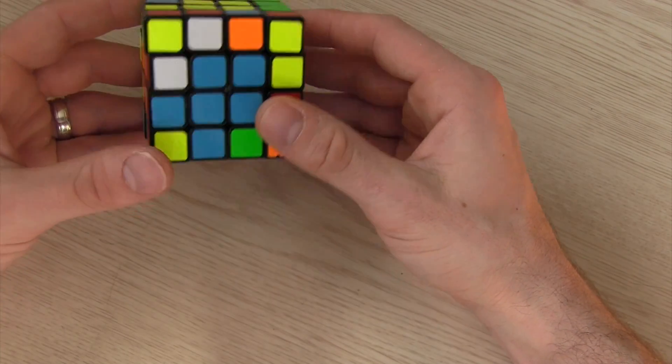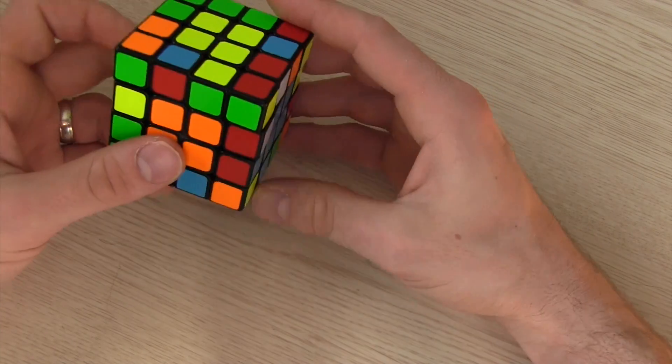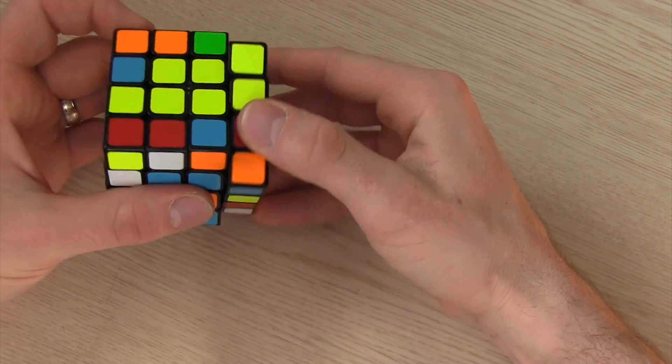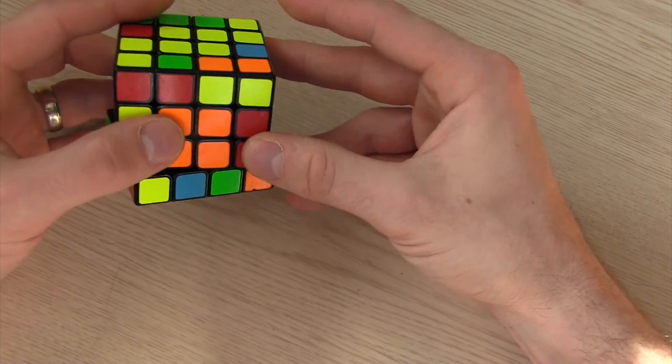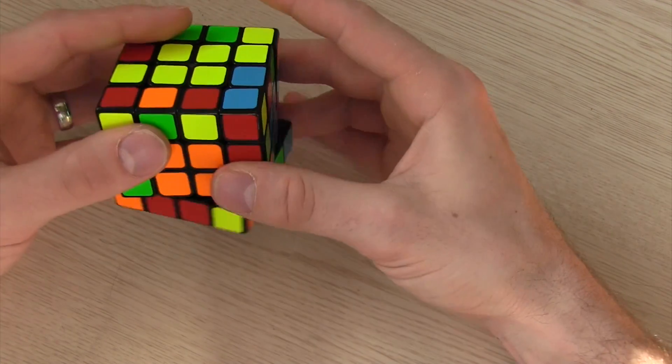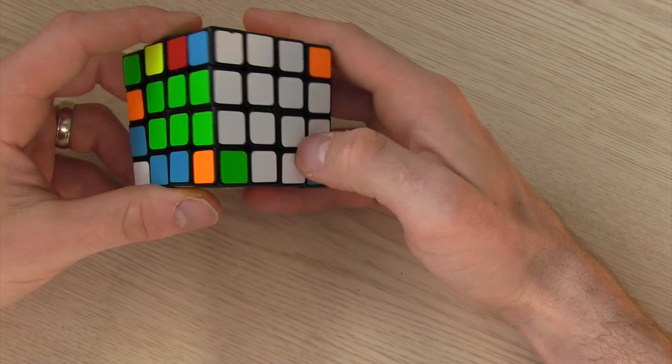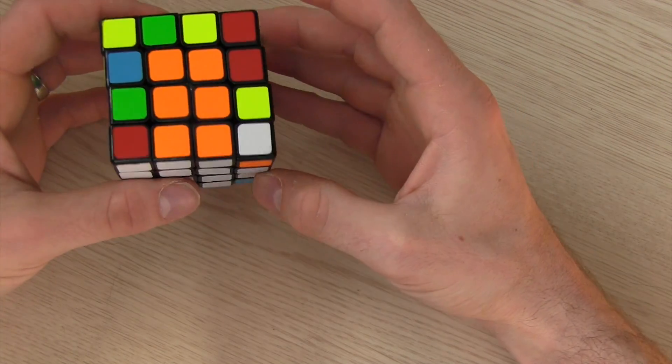So now before I go any further I'm going to set up the final edge this white and red and there's a few different ways you can do this. I'm just going to set it up like that, move it into place and now the cross is done on the 4x4.